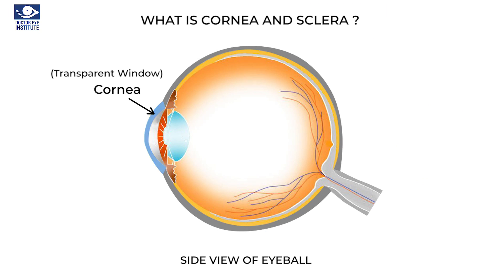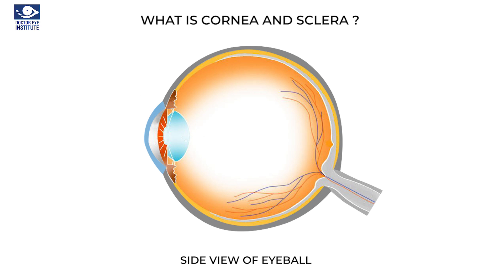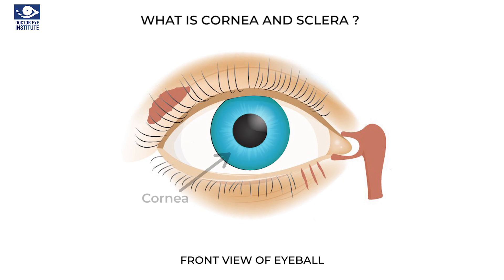So what is the cornea and sclera? The cornea serves as the transparent round window that allows the entry of light, whereas the sclera provides a dark box that allows the formation of an image on the retina. The cornea together with the sclera forms the outer layer of the eye, occupying one third of the eyeball. The cornea itself is transparent, but the colour we see in the centre is due to the iris pigments.